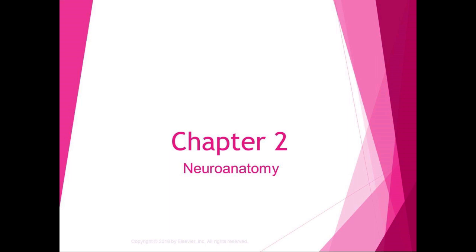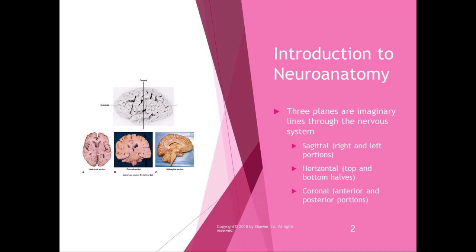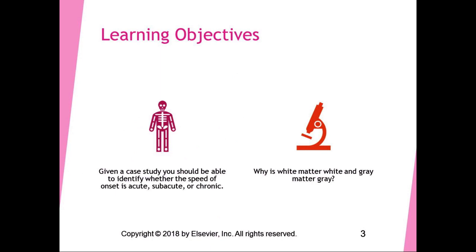I'm going to briefly talk about chapter two. Most of it you will not be responsible for at this level of detail, but you will use this to complete your brain and nervous system function chart. Just like in kinesiology when we talked about anatomical position, we have the same planes through the brain: sagittal divides the brain into left and right portions, horizontal divides into top and bottom halves, and coronal divides into anterior and posterior portions.